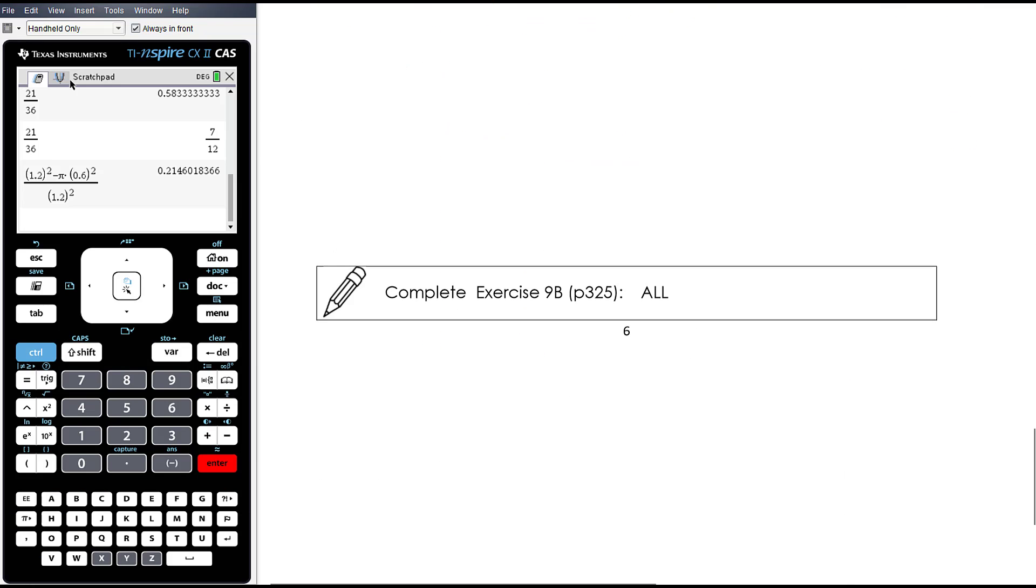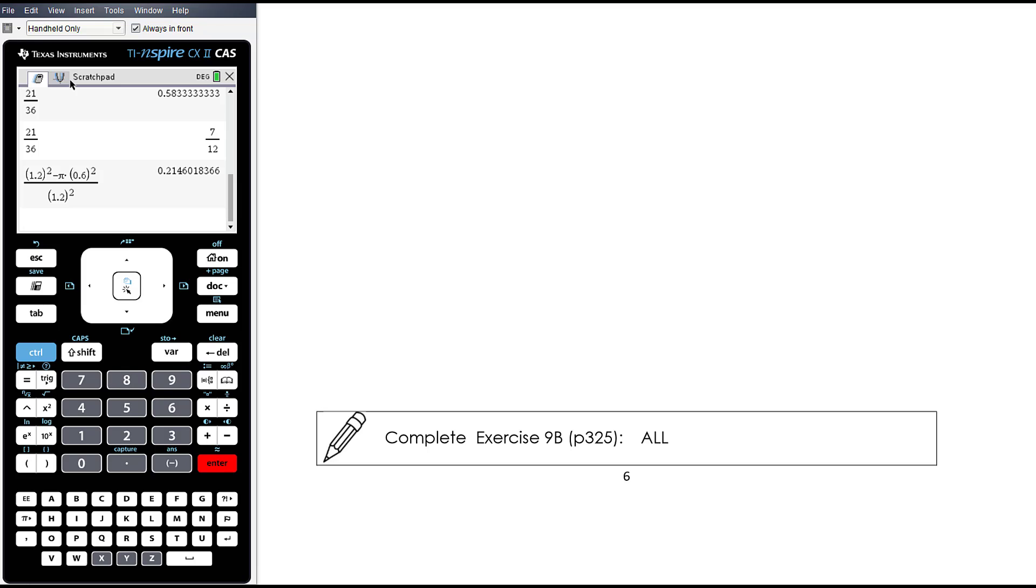Okay, so the work today is from exercise 9B, just continuing to work out some basic probability questions, some involving area, and some thinking about experimental probabilities.